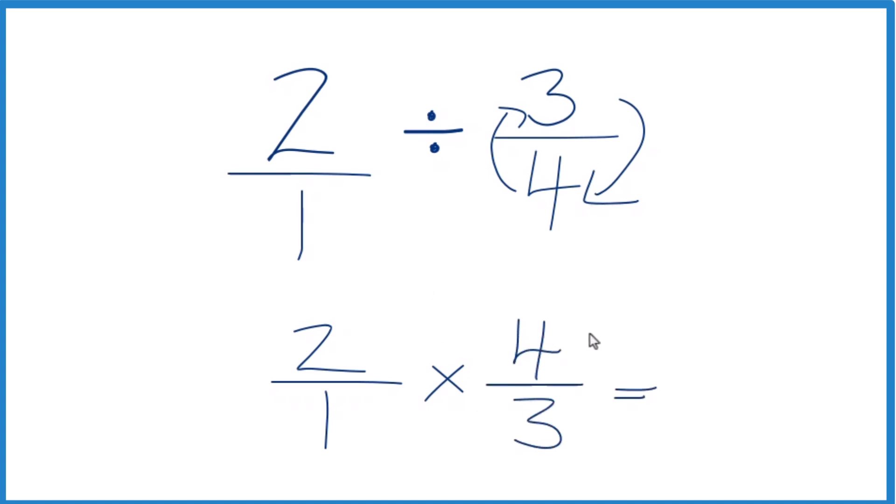When we do that, we're multiplying fractions. We multiply the numerators and then the denominators. 2 times 4 is 8. And then 1 times 3, that's 3.